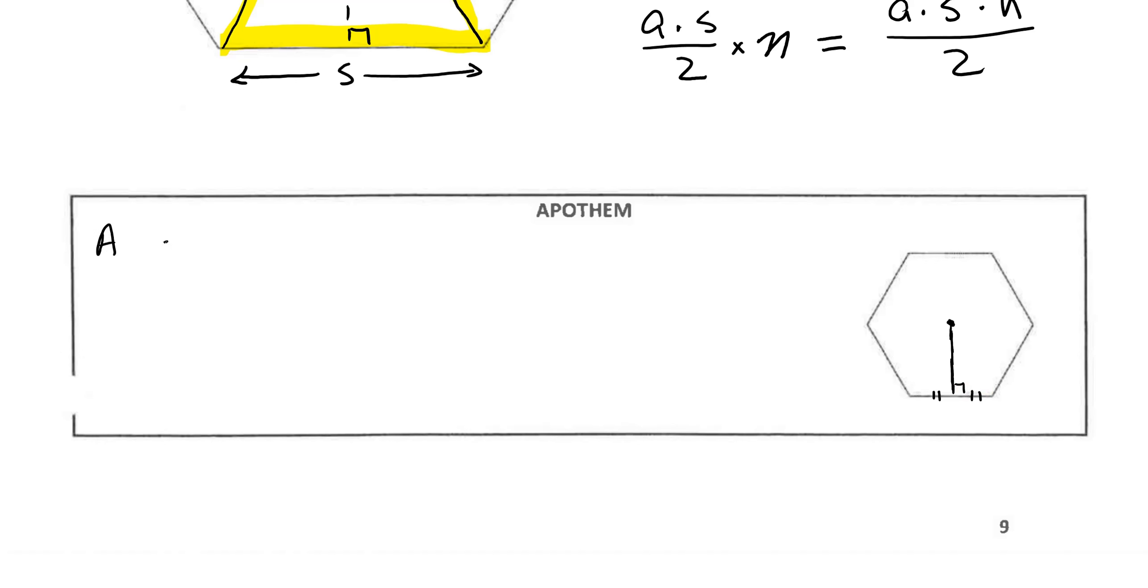So this is a segment drawn from the center of a regular polygon to the midpoint of a side. And we're going to need this when we start calculating areas.